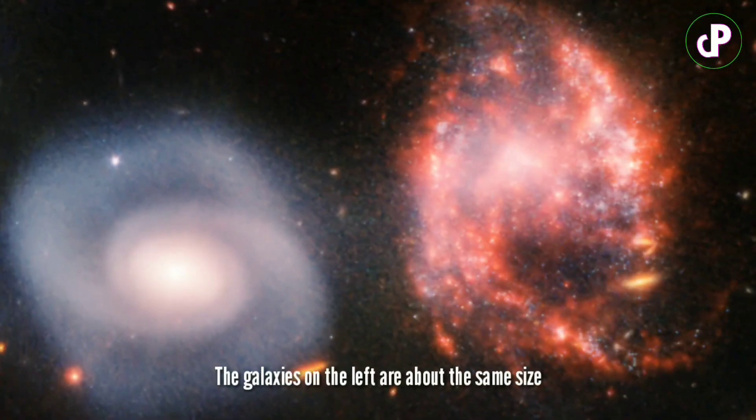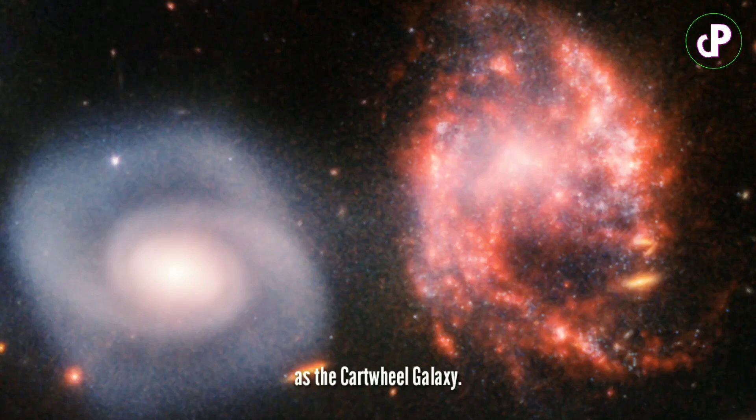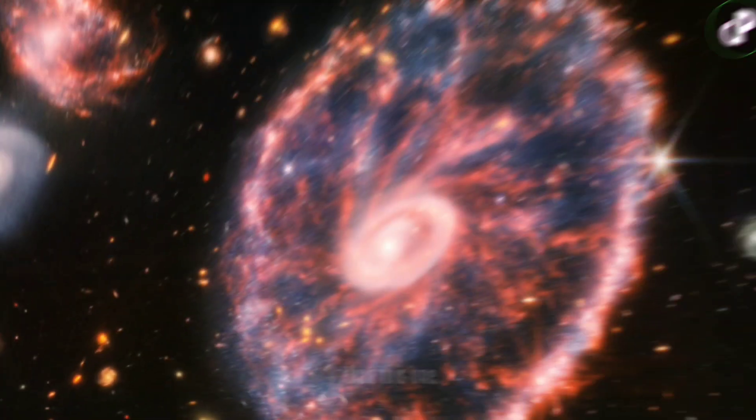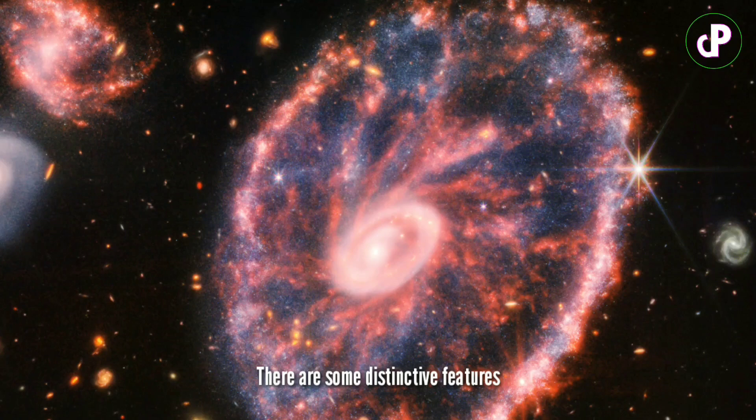The galaxies on the left are about the same size as the Cartwheel Galaxy, but they are located farther than this one. There are some distinctive features which separate this galaxy from other galaxies.